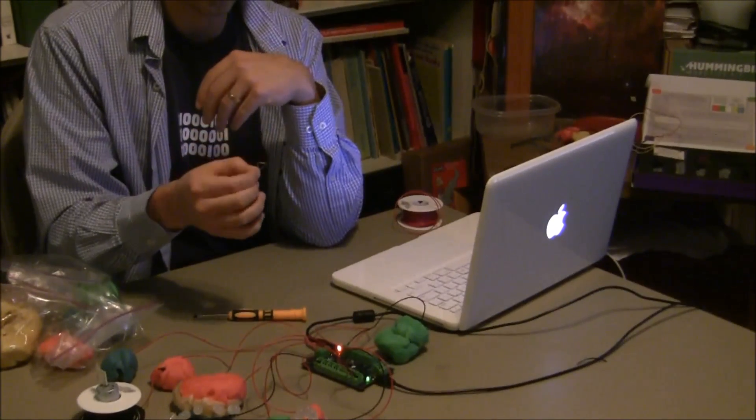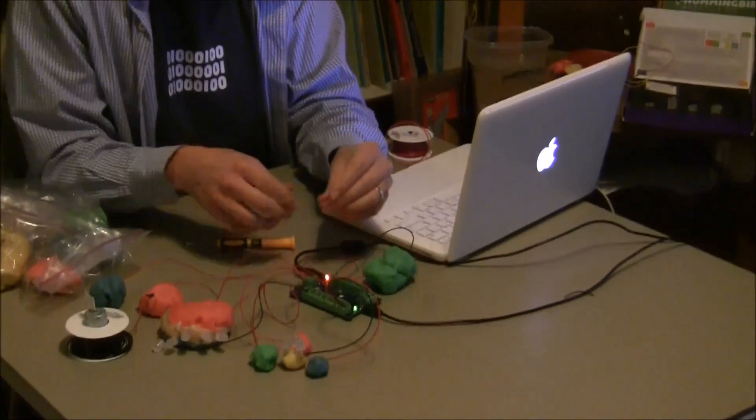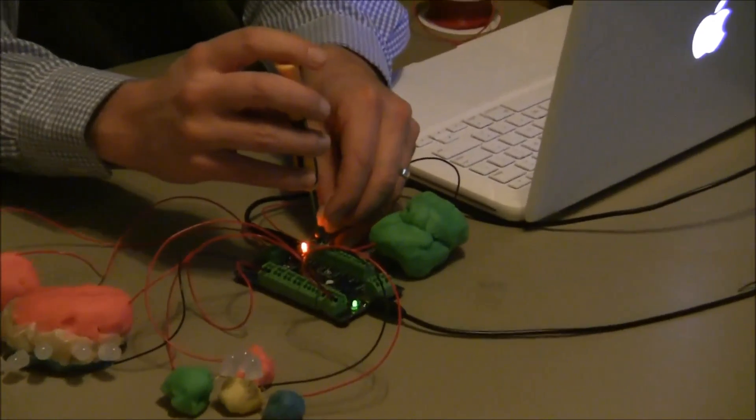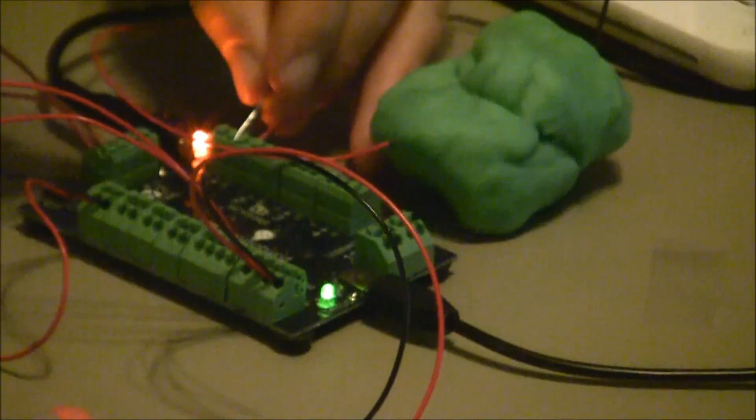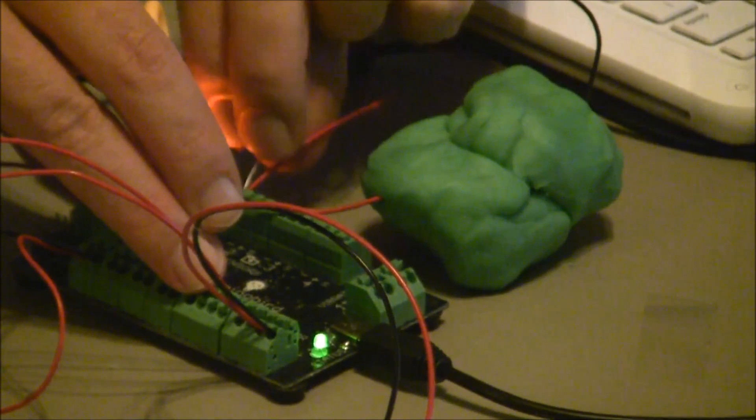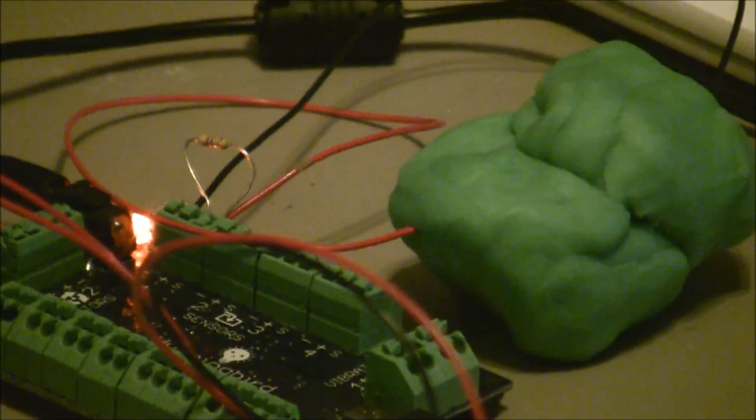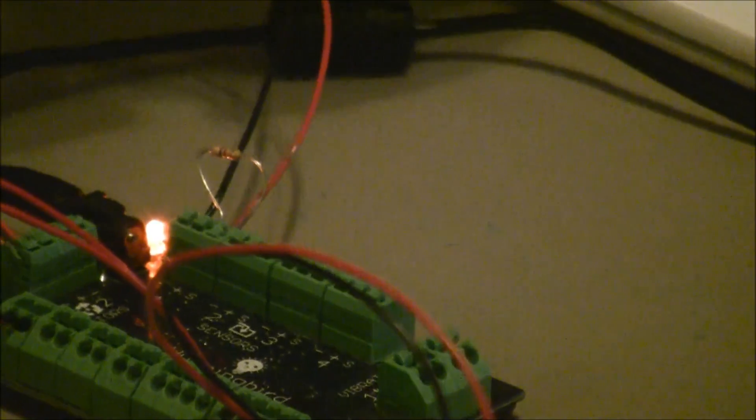And then, take a resistor. In this case, I am using a 470 ohm resistor, which I found to have the best overall sensor response. And I am going to stick one leg into the plus terminal, and that is pretty easy. And the other leg, I am going to stick with the red wire into the S terminal.